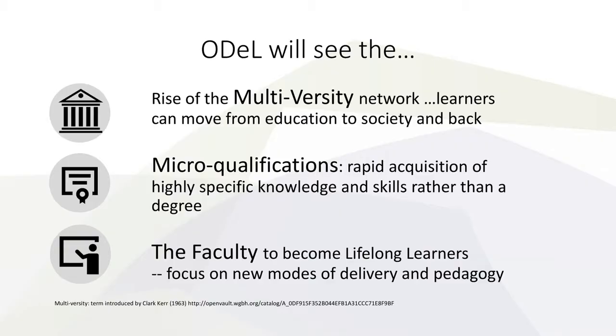In the fourth industrial revolution, learners have more choices and will demand greater flexibility. They will move back and forth from academia to employment. This will give rise to networks of multiversities, and collaboration will become key. Microqualifications will be as important as degrees, and the faculty will have to become lifelong learners to keep pace with these changes. Are we ready to harness emerging technologies to make learning more affordable, interactive, personalized, and interesting?